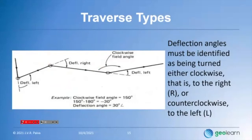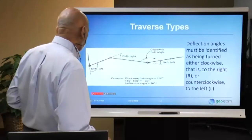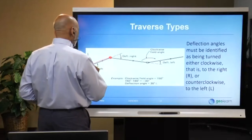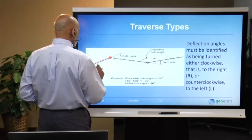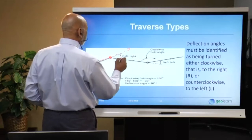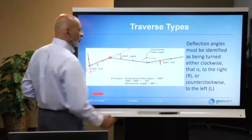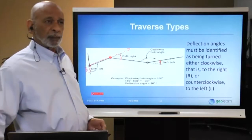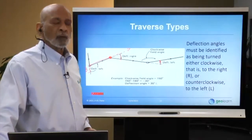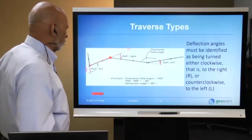Another way to measure angles is with deflection angles, common in route surveying and highway work. You set up at the instrument point, backside the back point reading zero, then invert the telescope so you're sighting in the forward direction still reading zero, then deflect right or left. You record an R or L next to the angular value, or use plus/minus with a specified sign convention — most people use plus for right.